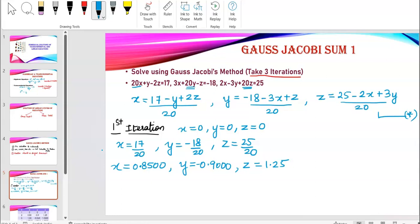Now, for the second iteration, I'll put these values. Whatever values of x, y and z, I have got. I'll put these values in equation star. So, this time, I put these values in equation star first and now I'm putting these values that is 0.85, y is negative 0.9 and z is 1.25 in equation star.